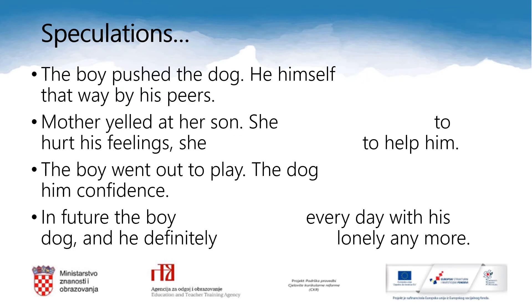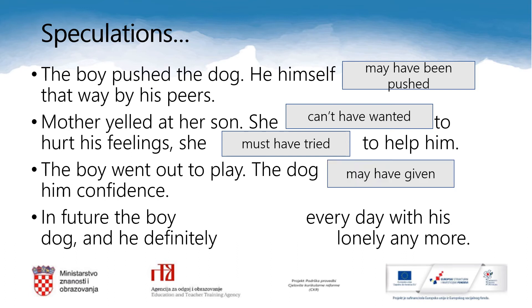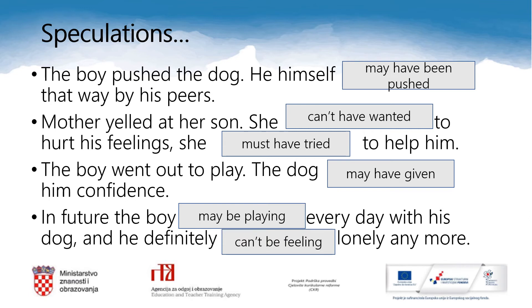Let's now check what you have written. The boy pushed the dog — he himself may have been pushed that way by his peers. Mother yelled at her son — she can't have wanted to hurt his feelings; she must have tried to help him. The boy went out to play — the dog may have given him confidence in future. The boy may be playing every day with his dog, and he definitely can't be feeling lonely anymore.